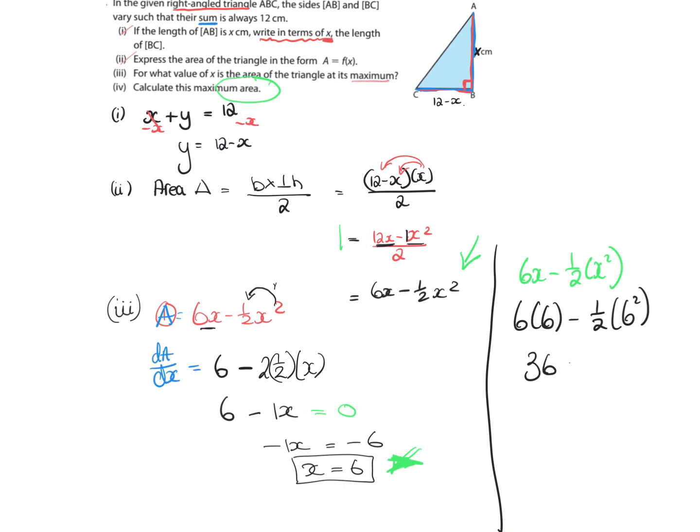So 36 minus ½ of 36, so 36 minus 18, I think. And then if we subtract those, I should get 18. And this is centimeters squared. That is the most area that that triangle can be if the highest point, or if the x value, is 6.